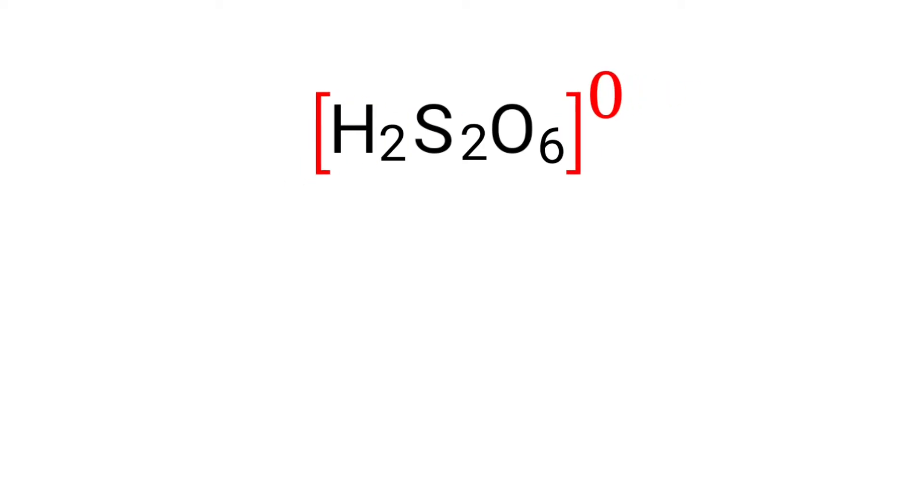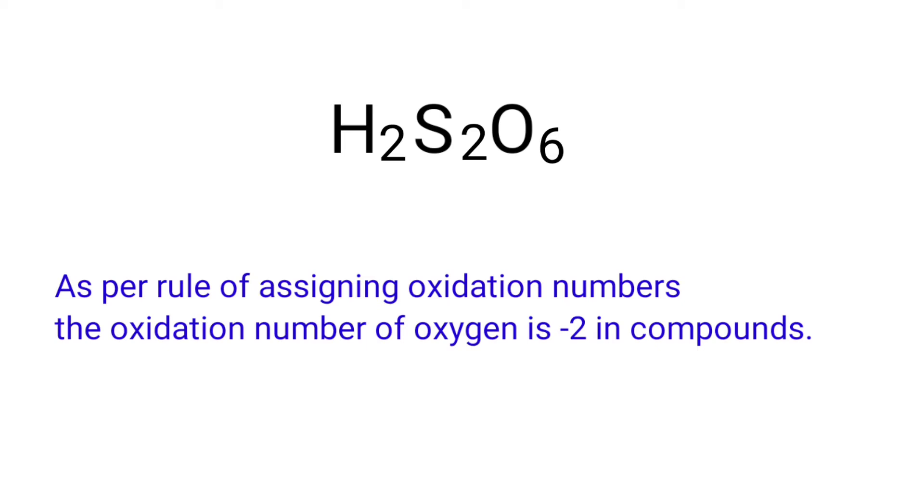Therefore, we know that the sum of the oxidation number of the atoms is equal to 0. As per rule of assigning oxidation numbers, the oxidation number of oxygen is -2 in compounds. We can write the oxidation number of the element above its symbol and the total number of the oxidation number of the atoms below its symbol.